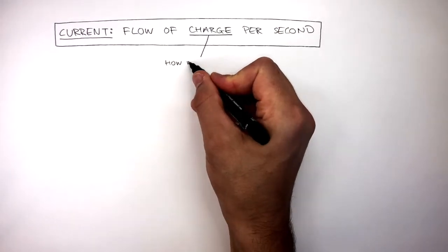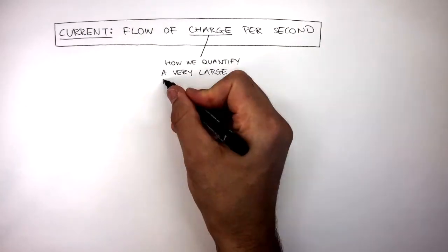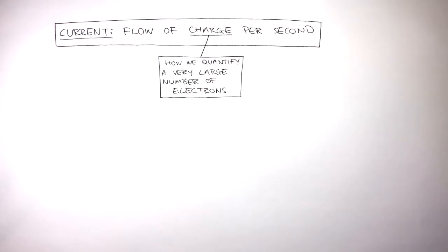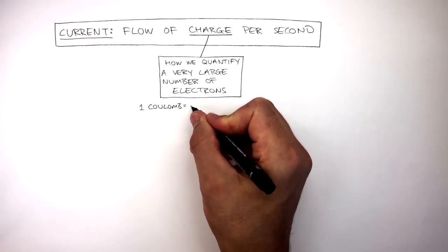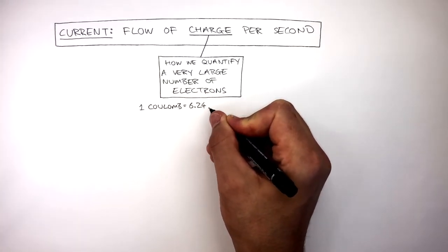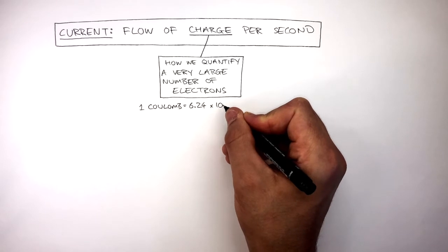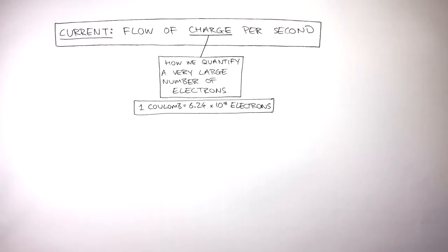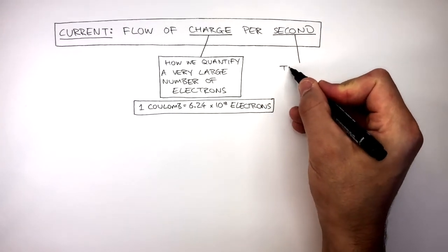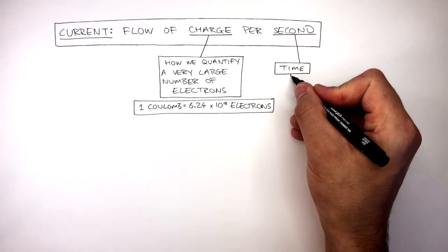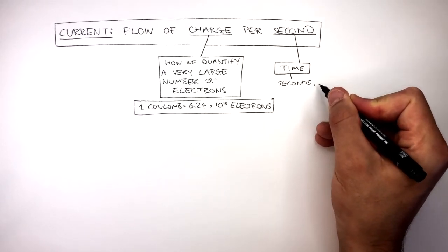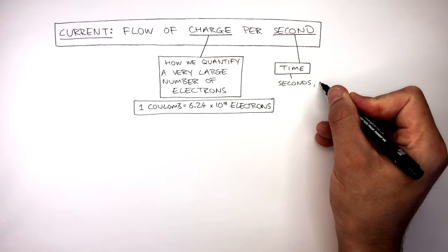Charge is how we quantify a very large number of electrons. Coulomb is the unit of charge where 1 coulomb equals 6.24 times 10 to the power of 18 electrons. Seconds means time. The unit of time we use is seconds and the symbol of seconds is a lowercase s.